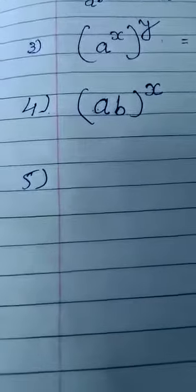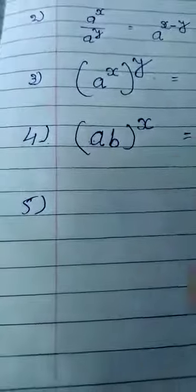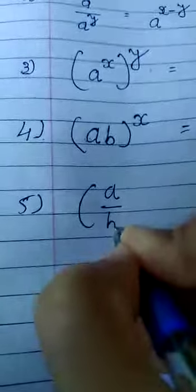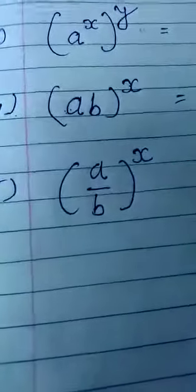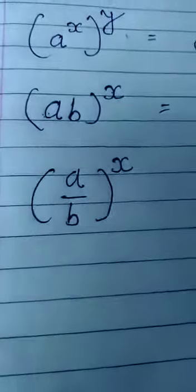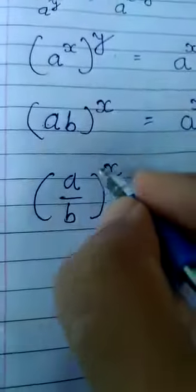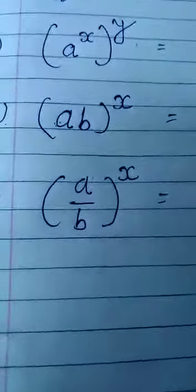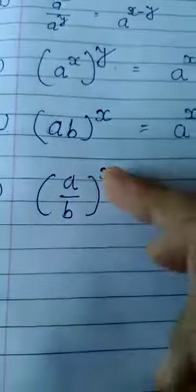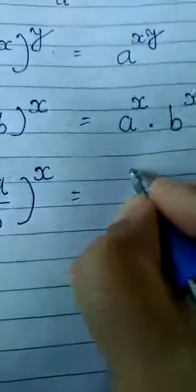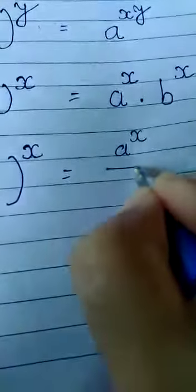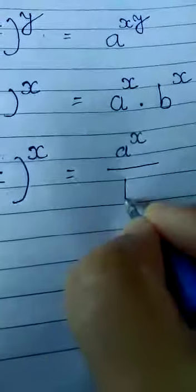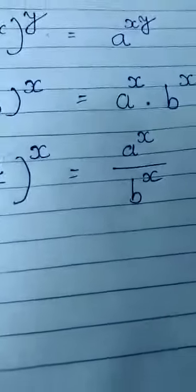The fifth rule is the fractional rule. When you have a divided by b, the whole thing to the power x, we can write it individually as a to the power x divided by b to the power x.